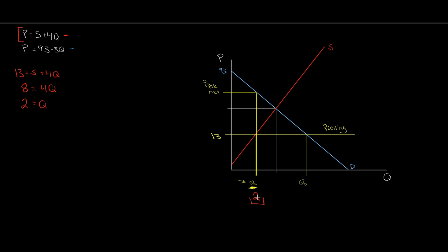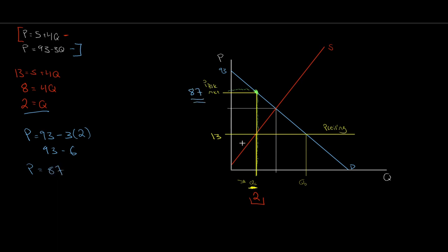Now we want to figure out what our black market price is. We take this quantity of 2 all the way up to our demand curve to get the corresponding black market price. Using our demand at Q = 2: P = 93 − 3(2) = 93 − 6 = 87. We get a black market price of $87. So with a price ceiling holding down quantity supplied, we have excess demand and thus a higher black market price.